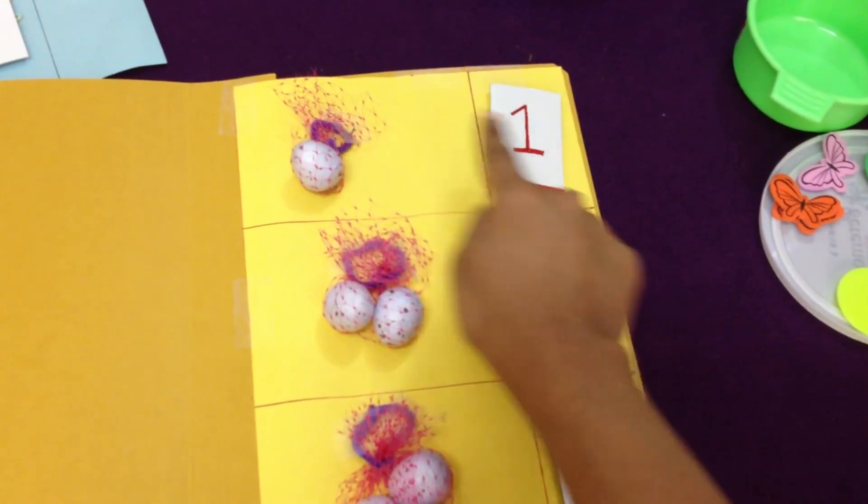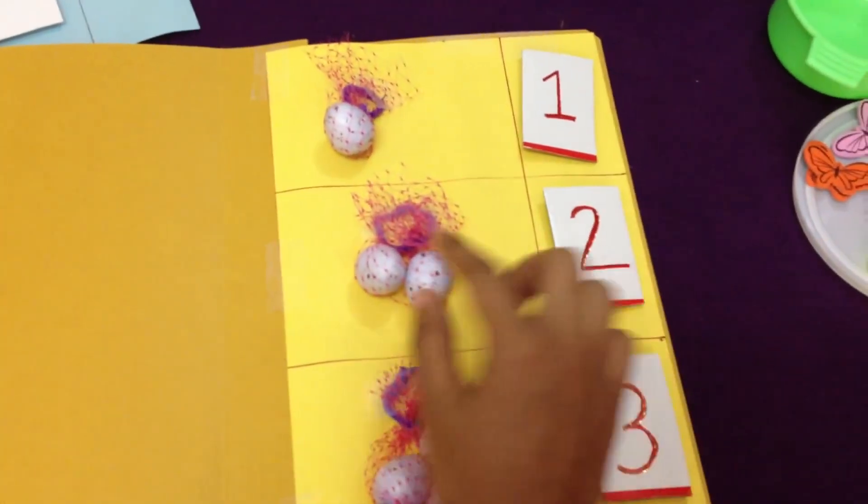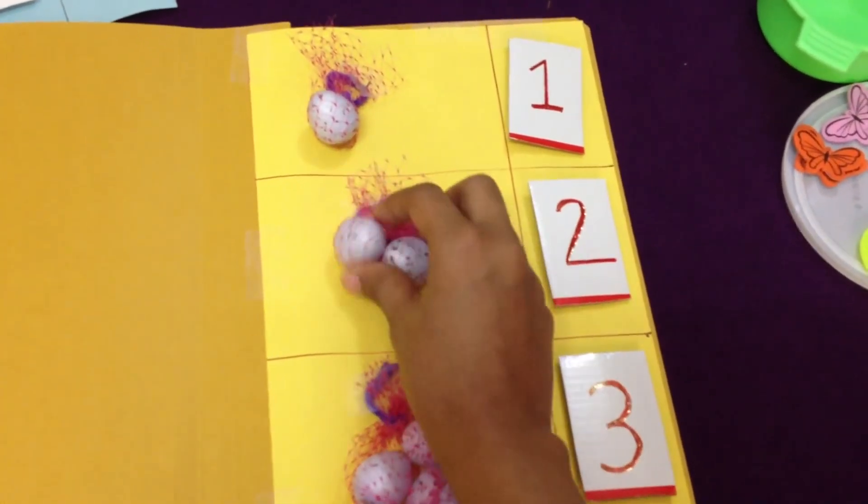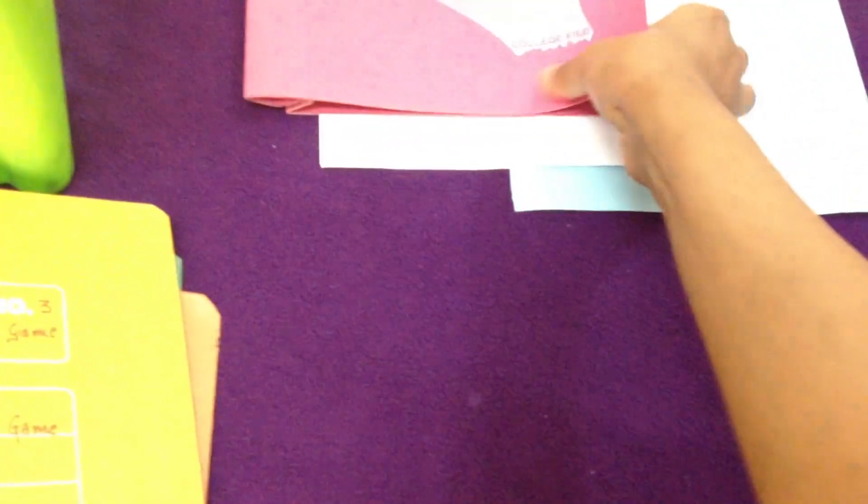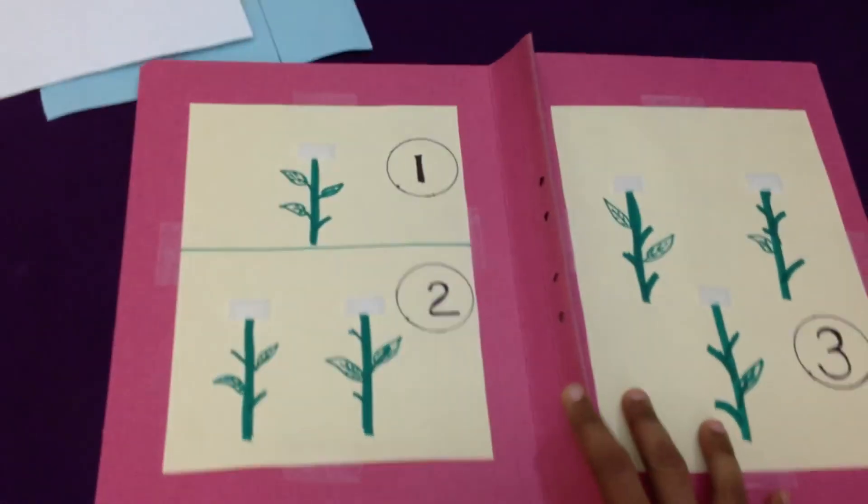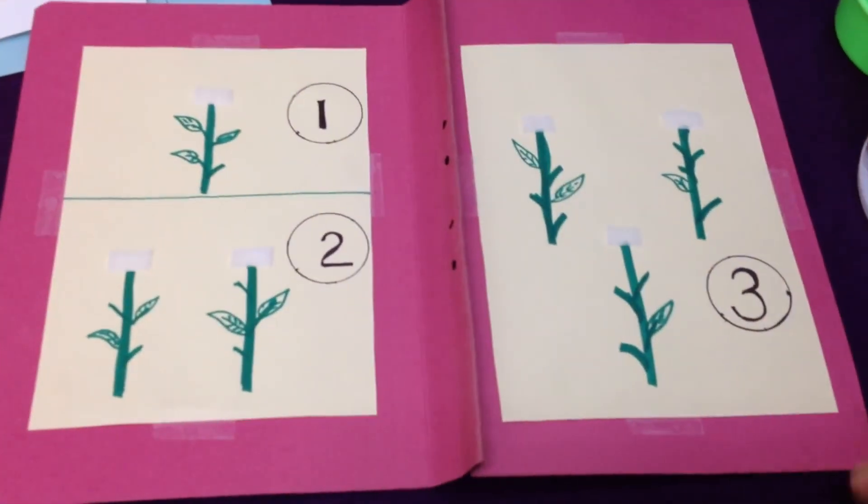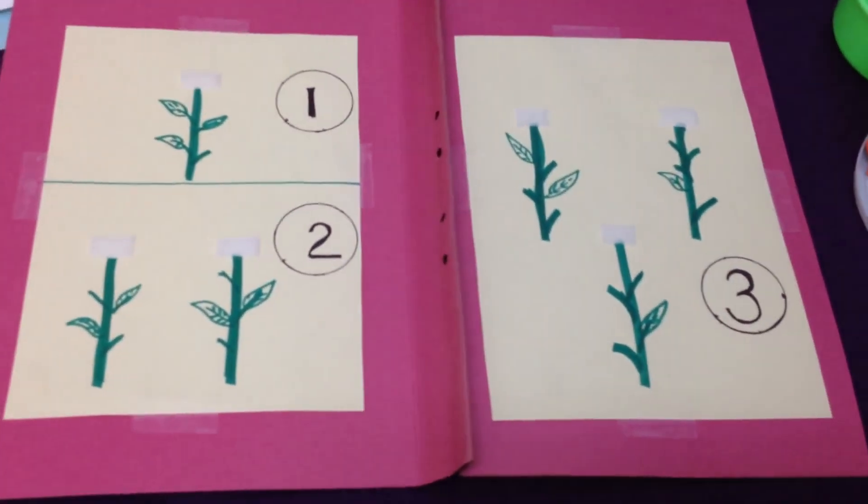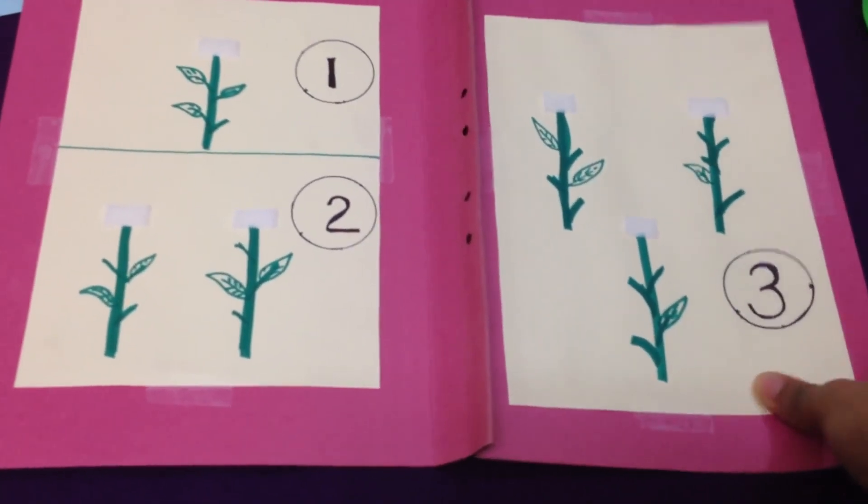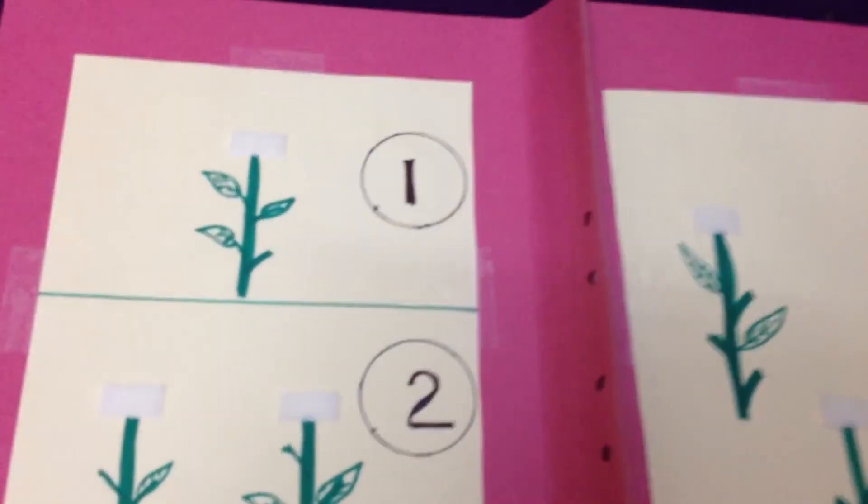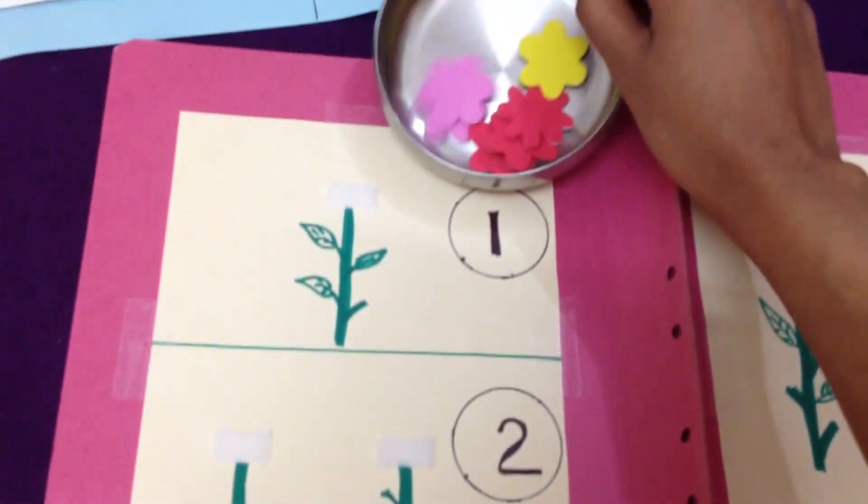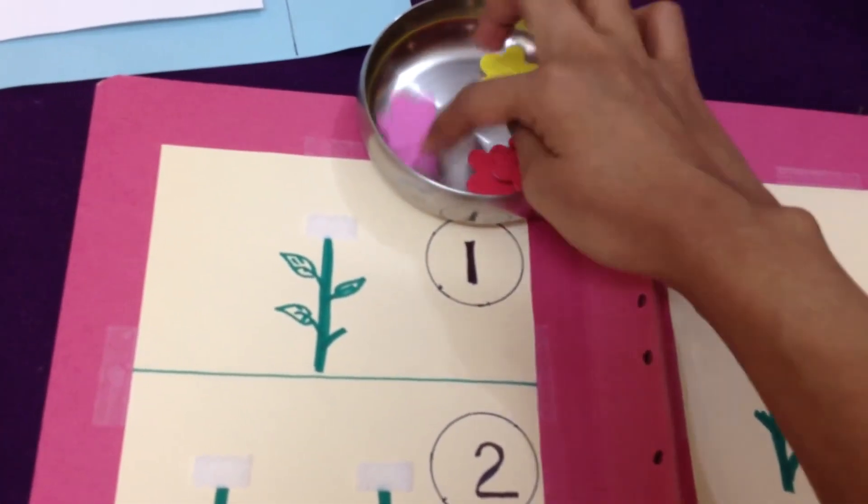Then I have flower counting. This is a great way if you don't have a printer at home and you don't want to print things out. I've just hand-drawn a stem with leaves and I have just got these foam flowers. You can use paper flowers or create flowers at home with paper.